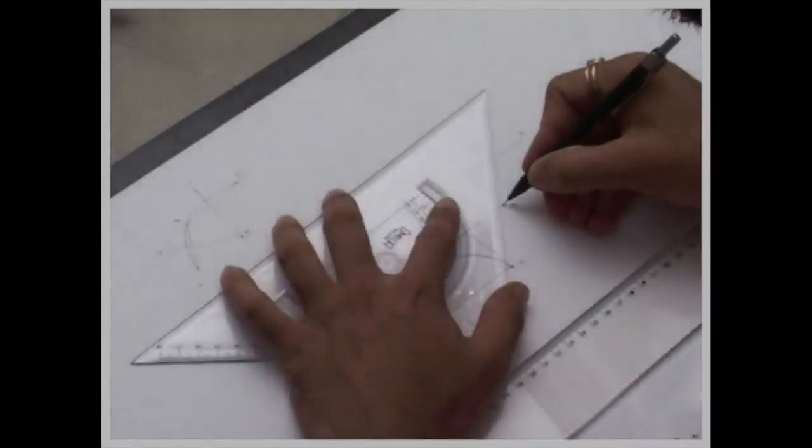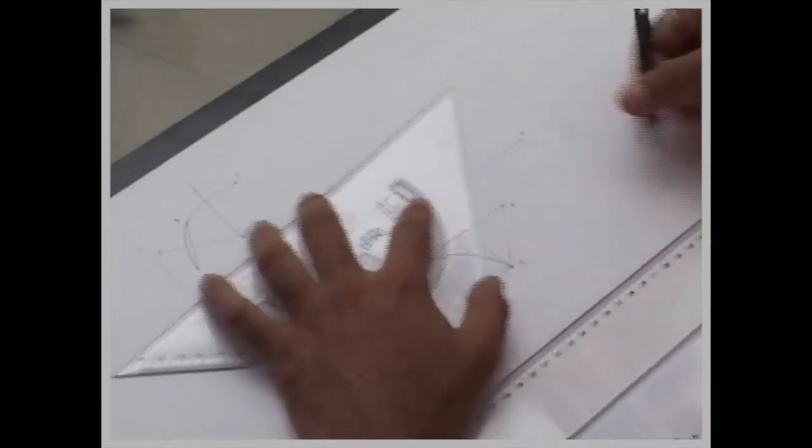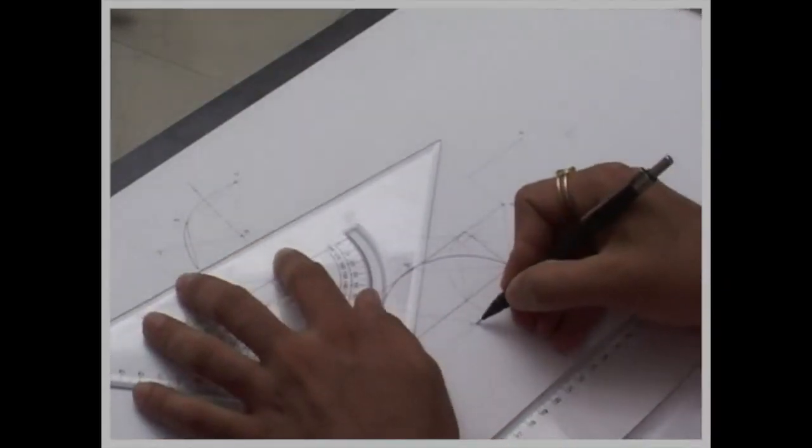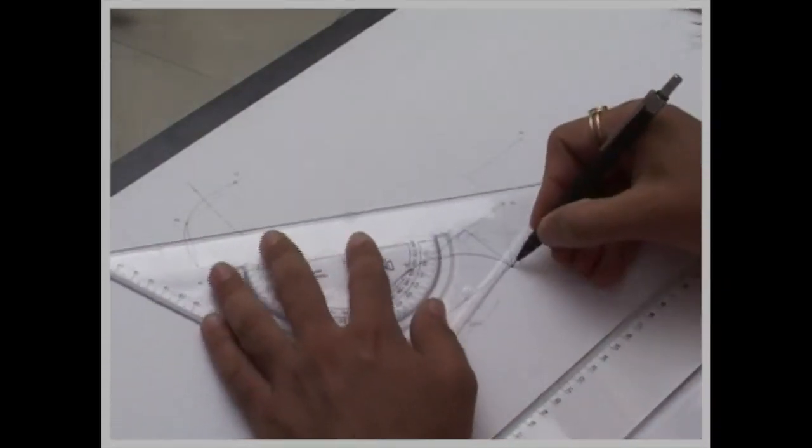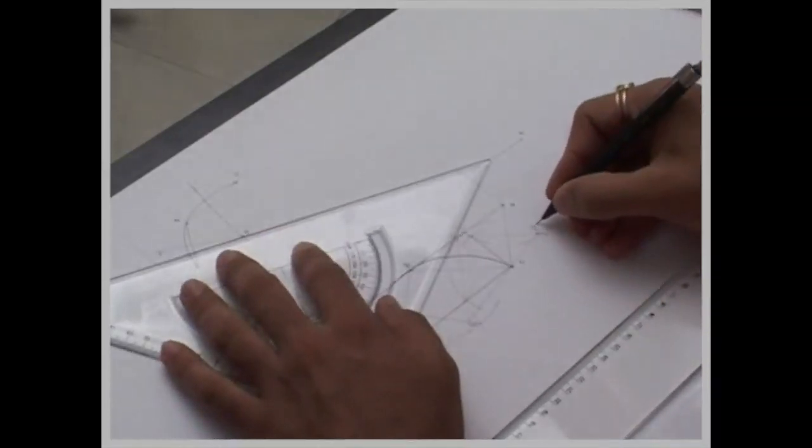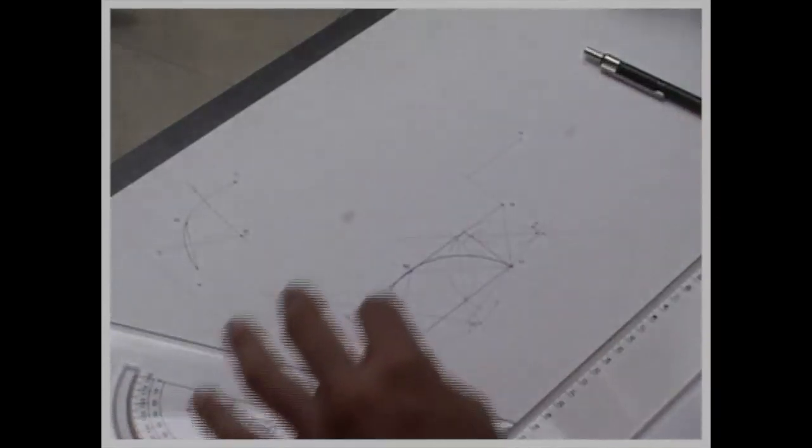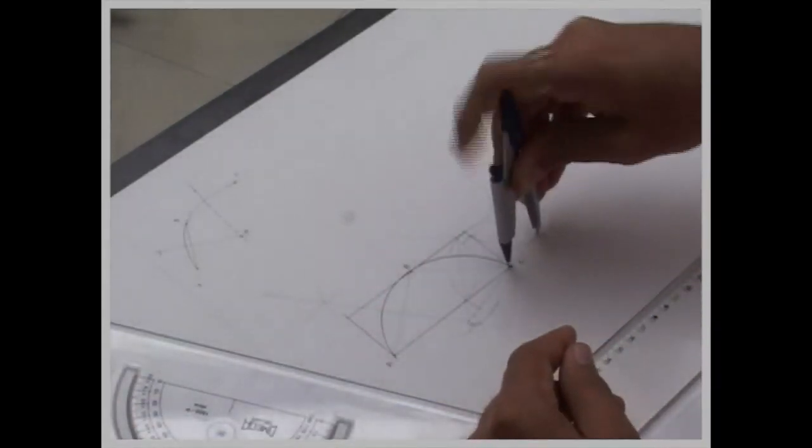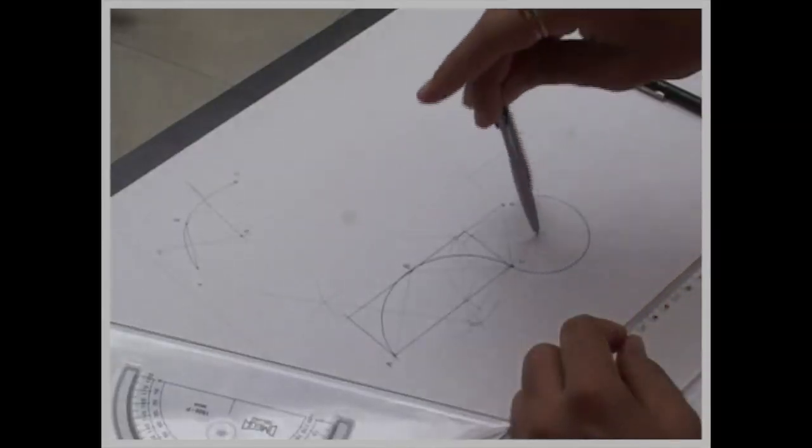So what we need to do? We will join c to b, bisect c d, and this is point O, so we will write O1, and draw a line passing through O1, c, and extend. Wherever it will cut, that is point O2. Now we will take O2 to c and draw this arc.